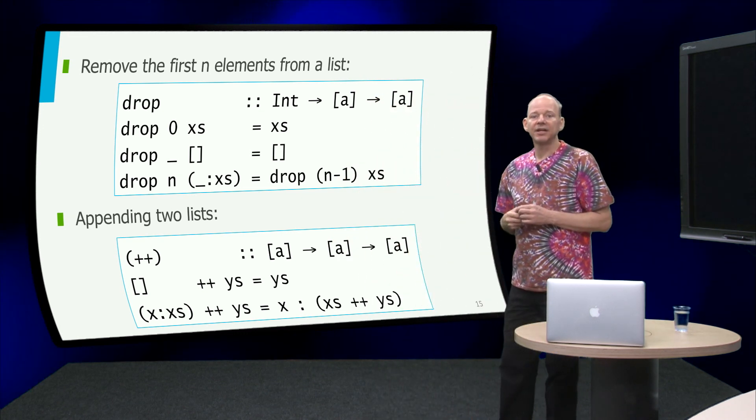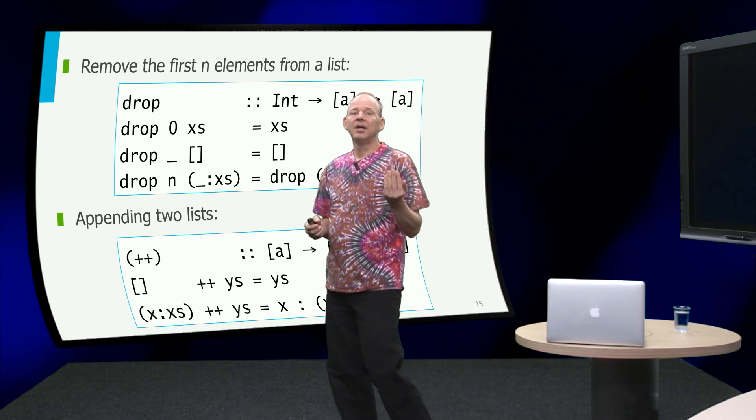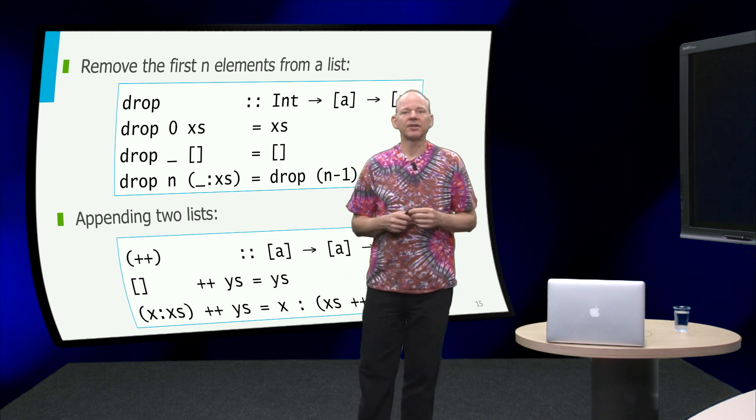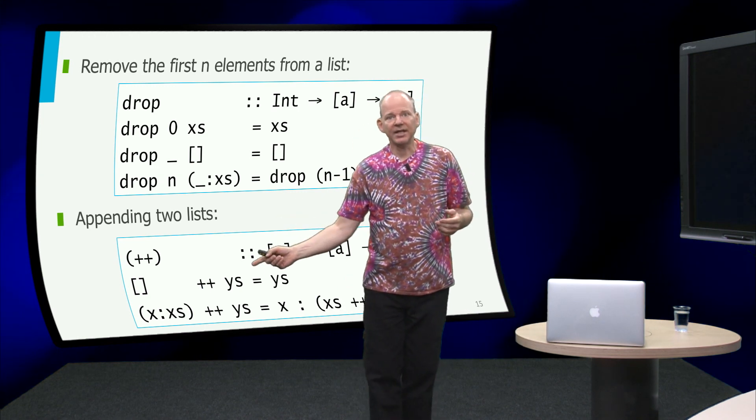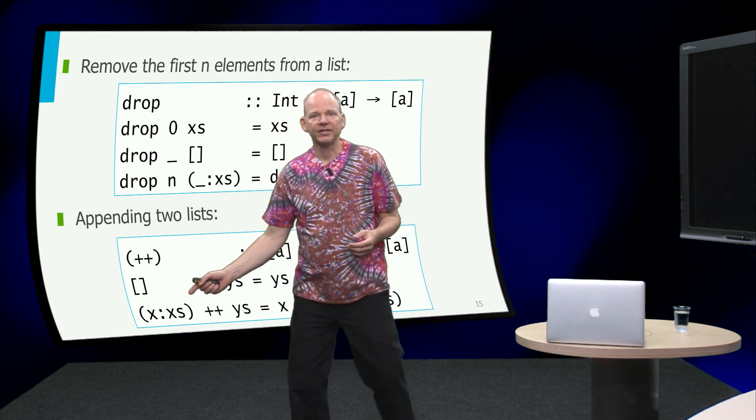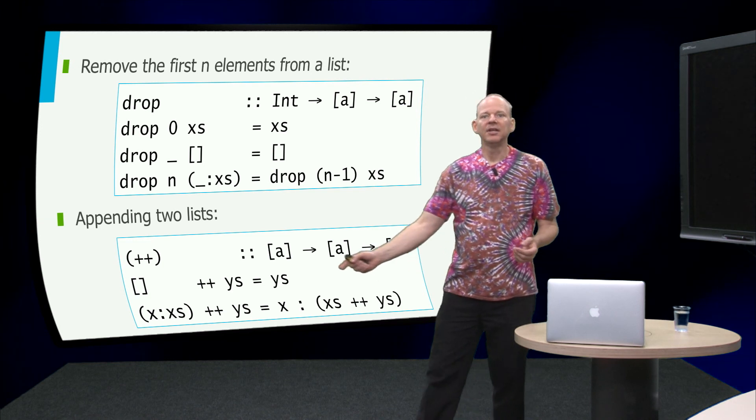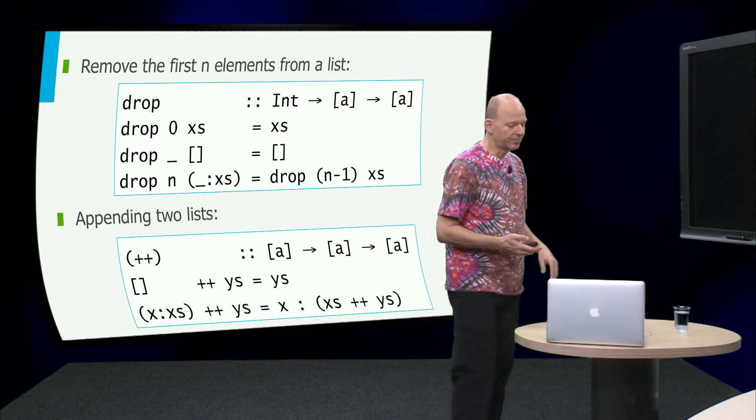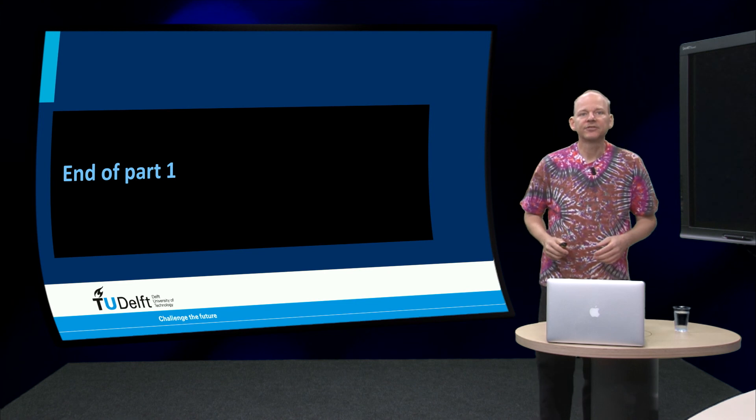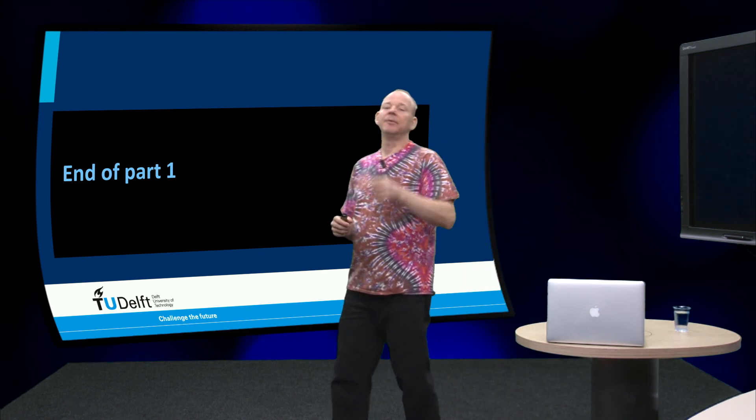The last example here on the slide appends two lists. If I want to append the empty list to another list, that is the other list. And then if I want to append a list x cons x's to a list y's, well what do I do, I first append x's to y's and then cons x on top. Super obvious. Thank you so much and see you in part 2.